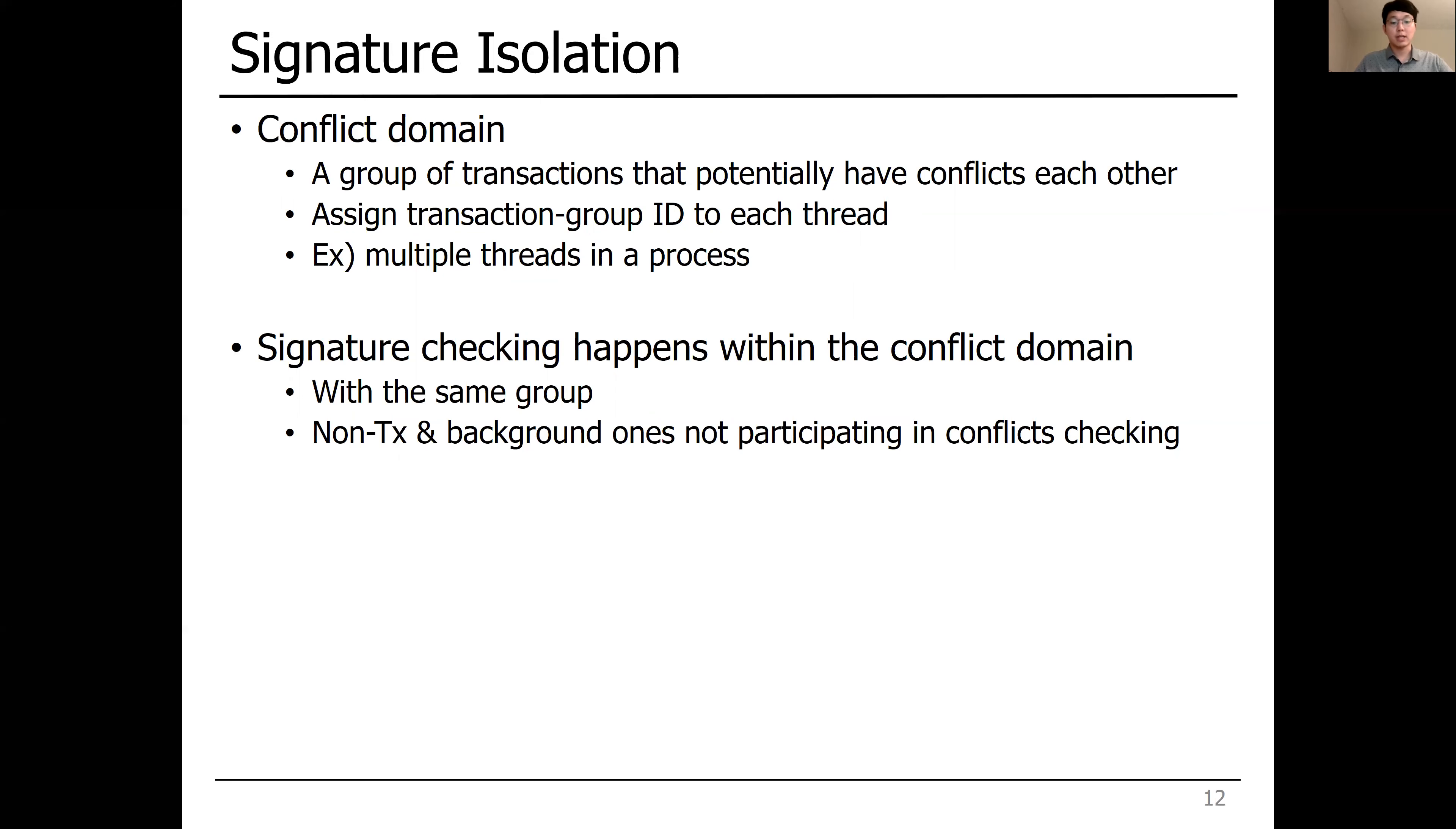So, initially, each process has a unique group ID, and whenever it spawns a new thread, the thread inherits the same group ID by default. In conflict checking, conflict domains confine the signatures participating in conflict checking. The possibility of false-positives drastically reduced.